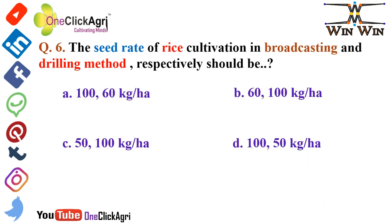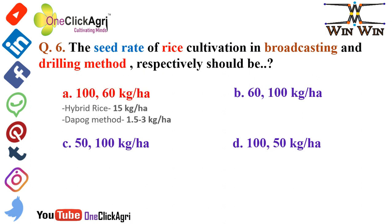The next question: the seed rate of rice cultivation in broadcasting and drilling methods respectively should be 100 and 60 kg per hectare. The other two seed rates of rice: hybrid rice seed rate is 15 kg per hectare, and for the Dapog method it is 1.5 to 3 kg per hectare — please remember these two.